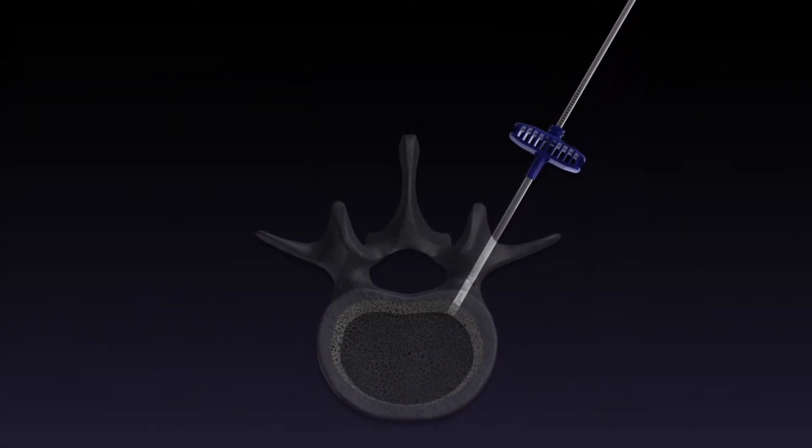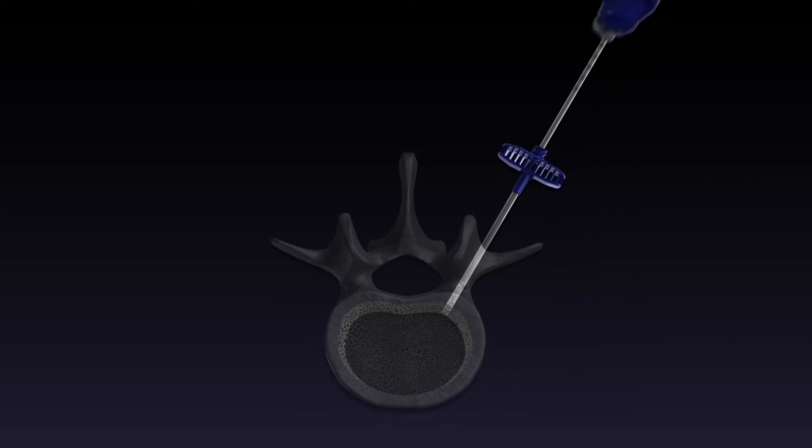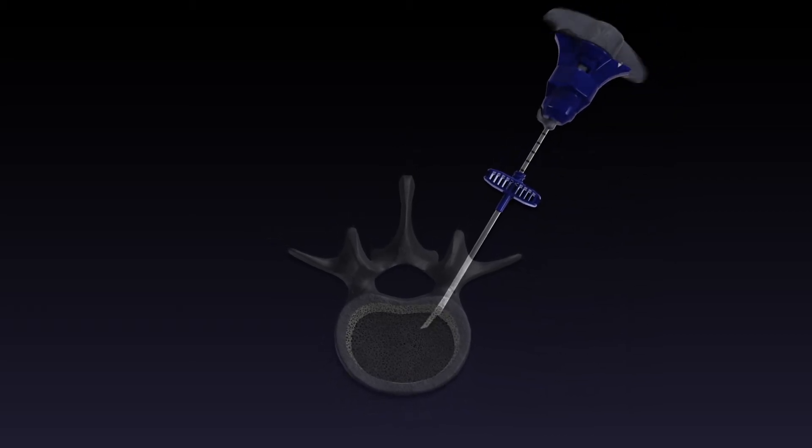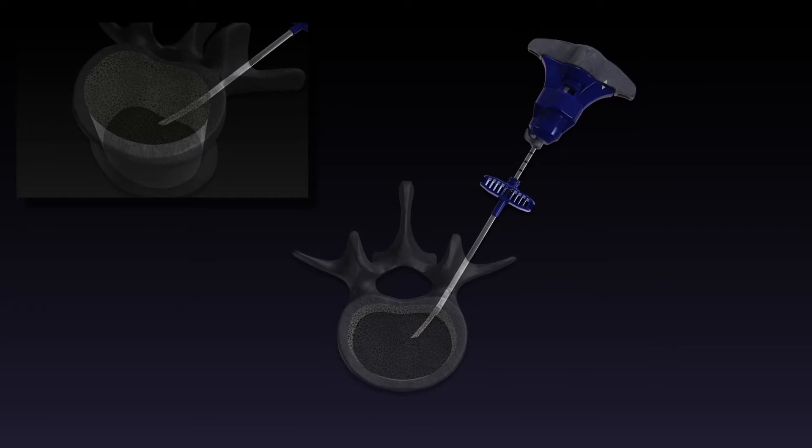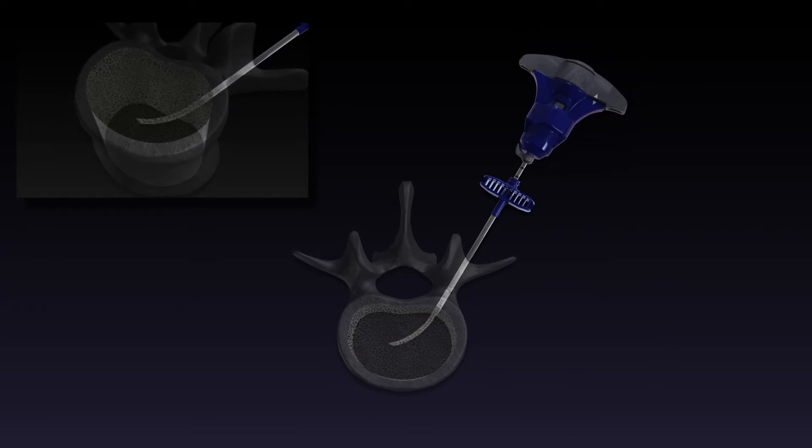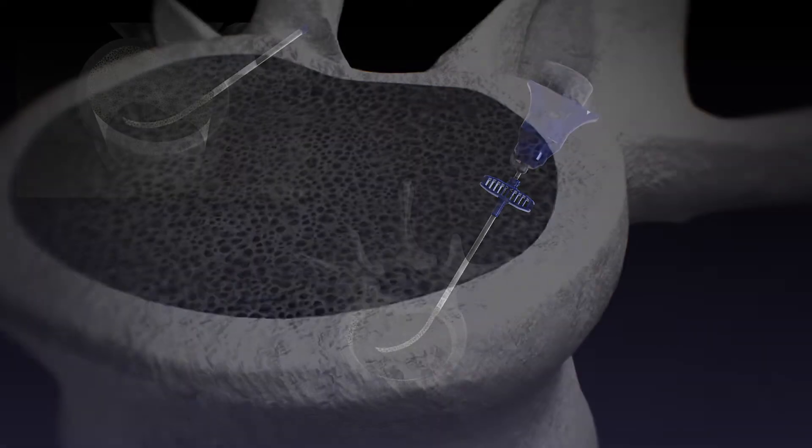The power curve is then used to create a preferential pathway for the high viscosity stability bone cement to flow within the vertebral body. Here the physician creates a channel across the midline of the vertebral body.